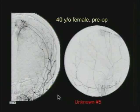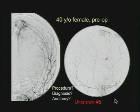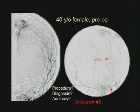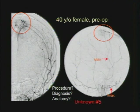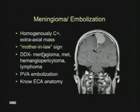Unknown number five — here's a 40-year-old pre-op. What is this procedure? This is a frontal and lateral projection from an ECA injection. The vessel feeding the lesion is the middle meningeal artery, coming off the internal maxillary artery. This is a hypervascular mass — a patient with a meningioma undergoing preoperative embolization. This is the mother-in-law sign on angiography: comes early and stays late.